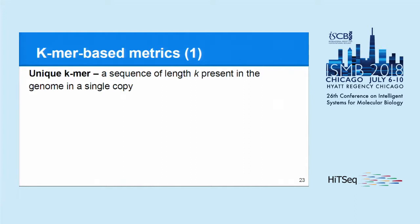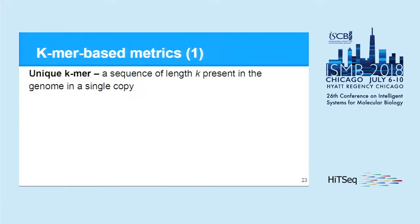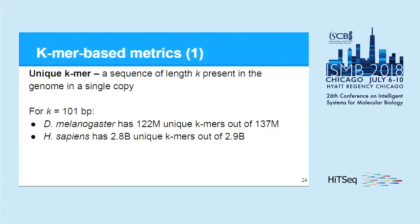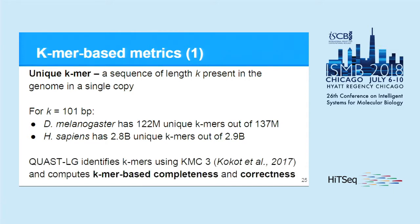Now let's move to our new group of metrics, which we call K-mer based metrics. A K-mer is simply a sequence of length K, and we call a K-mer unique if it is present in only a single copy in the genome. If K is sufficiently large, such unique K-mers are widespread in eukaryotic genomes. QUAST-LG identifies K-mers using KMC3 software and uses information about the presence of these K-mers and their locations to compute K-mer based completeness and correctness.